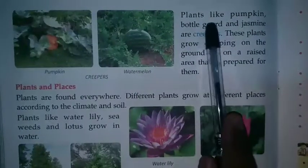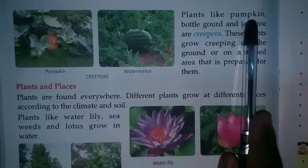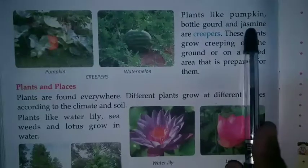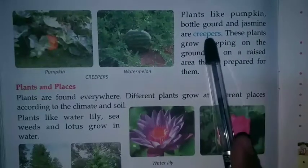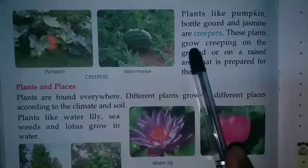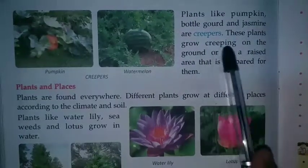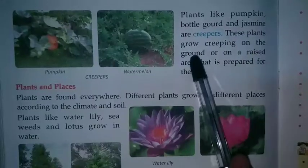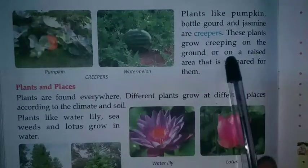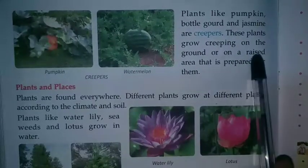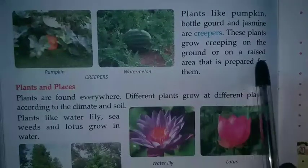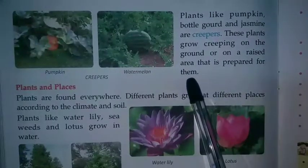Plants like pumpkin, bottle gourd and jasmine are creepers. These plants grow creeping on the ground or on a raised area that is prepared for them.